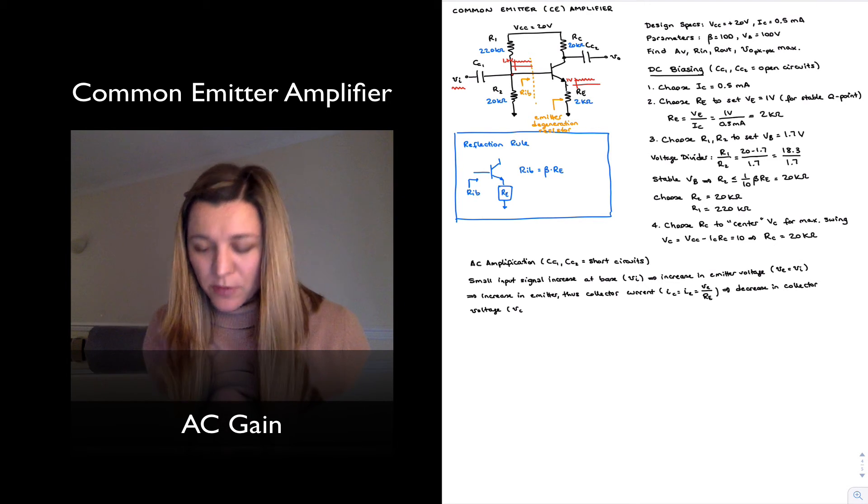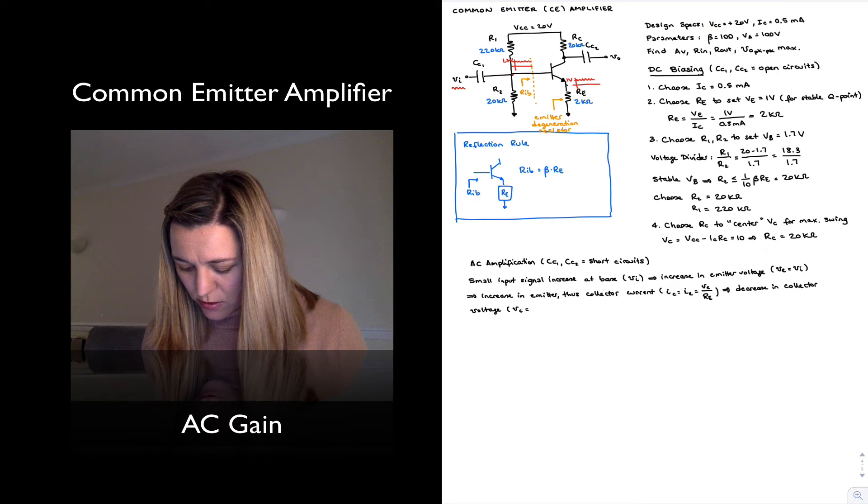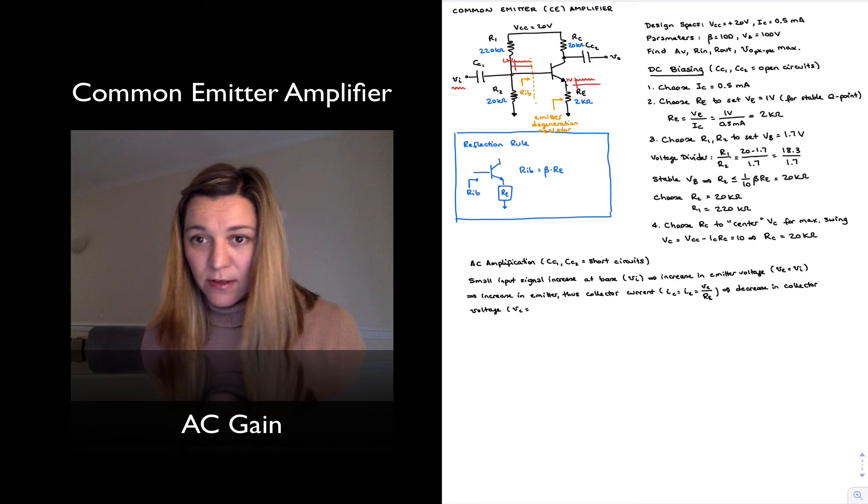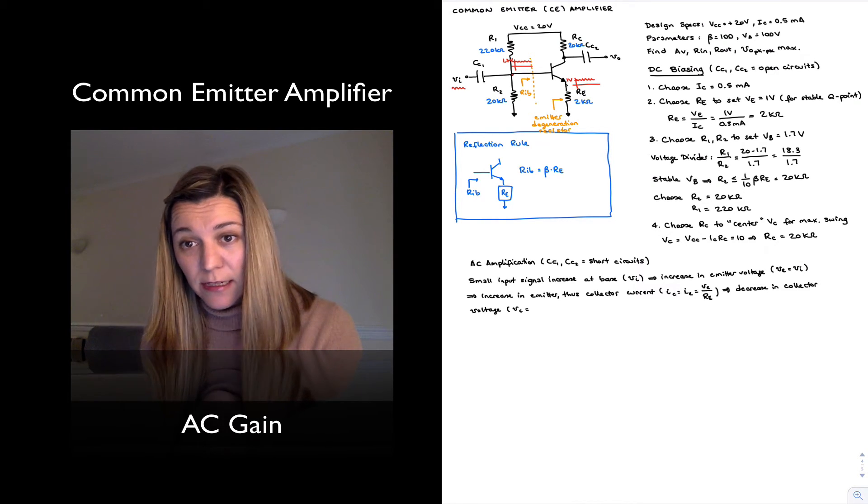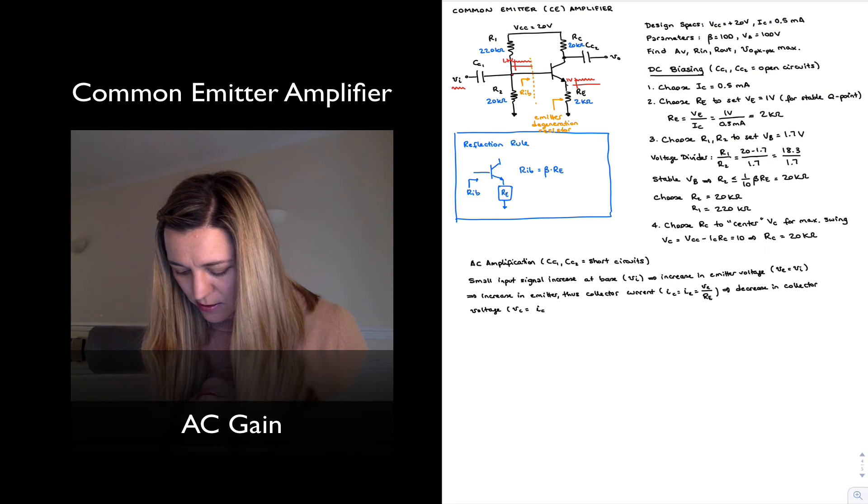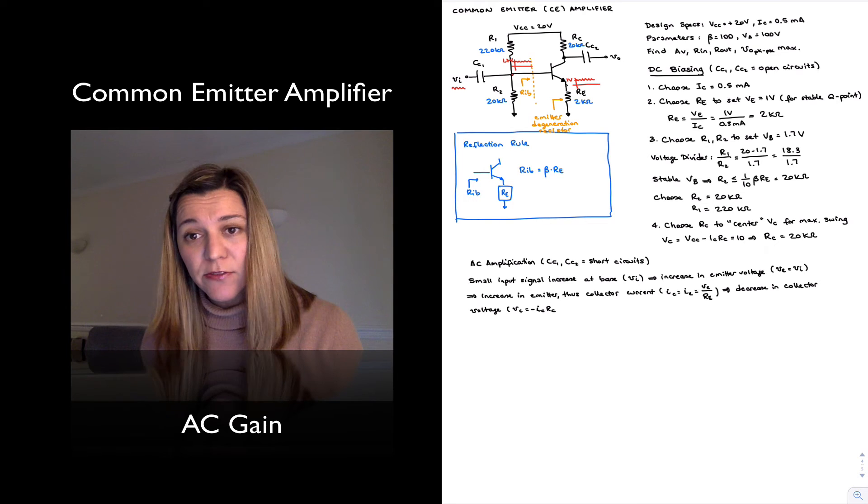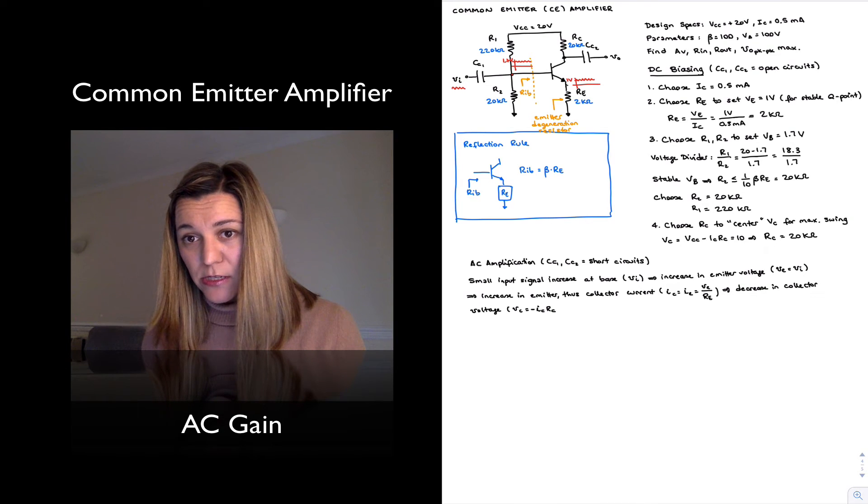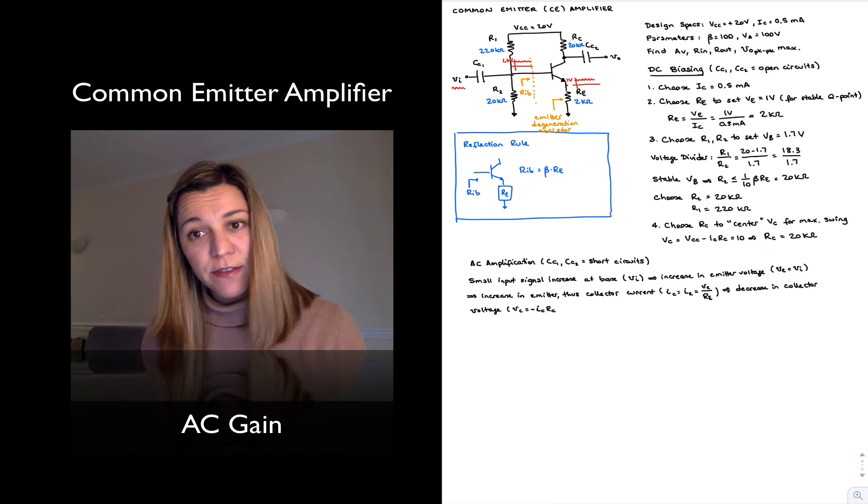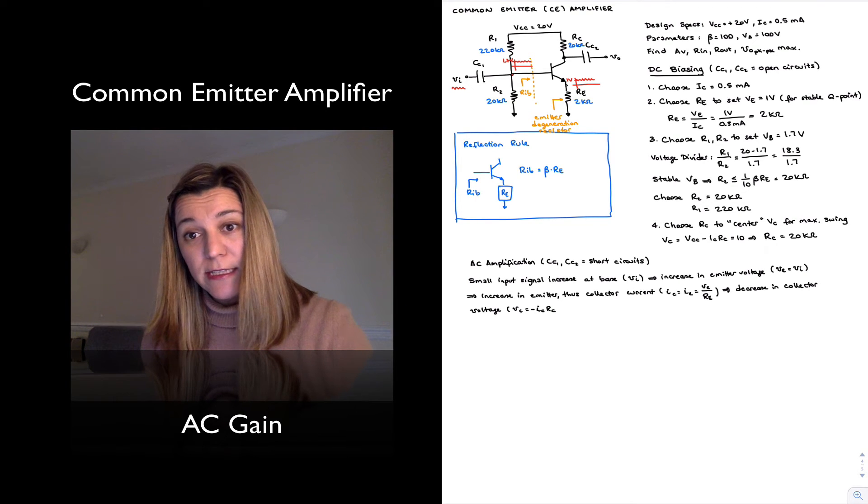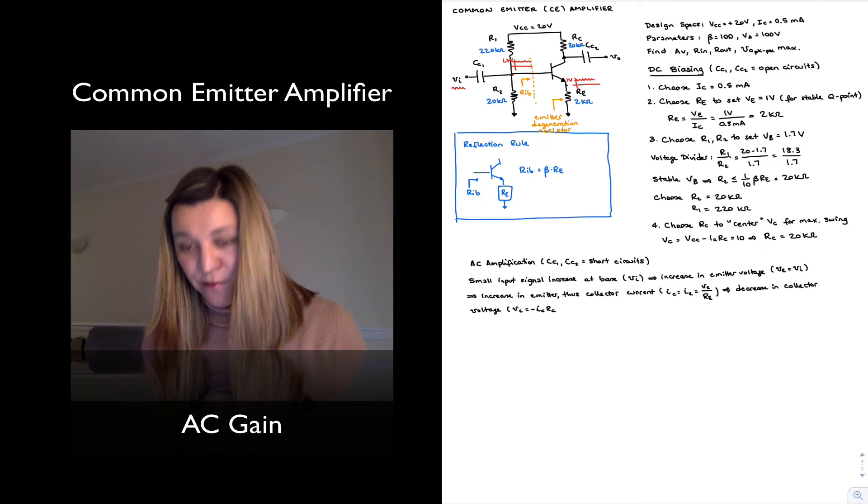That decrease is going to be equal to by a factor of IC times RC, or the delta in IC times RC. And it's also going to be negative. The negative sign implies that as IC increases, or a positive delta IC generates a negative delta VC.